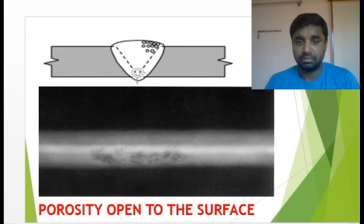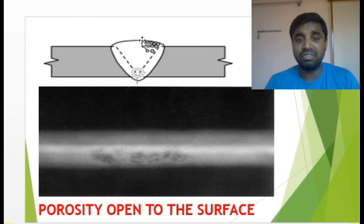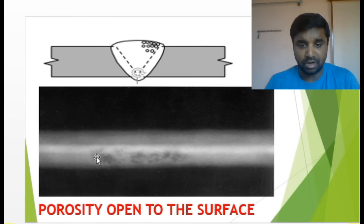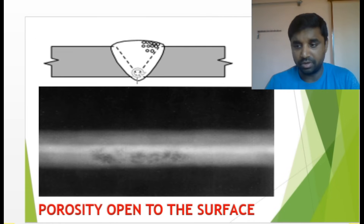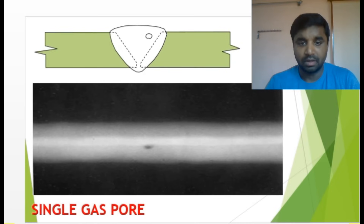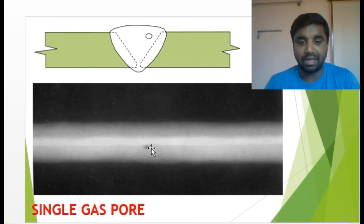Porosity open to the surface — this is porosity at the surface of the weld. In the radiograph you can see black color spots on the face — that is porosity open to the surface. Single gas pore — if there is a single gas pore inside the weld, one black circular spot appears. That is how a single gas pore looks.